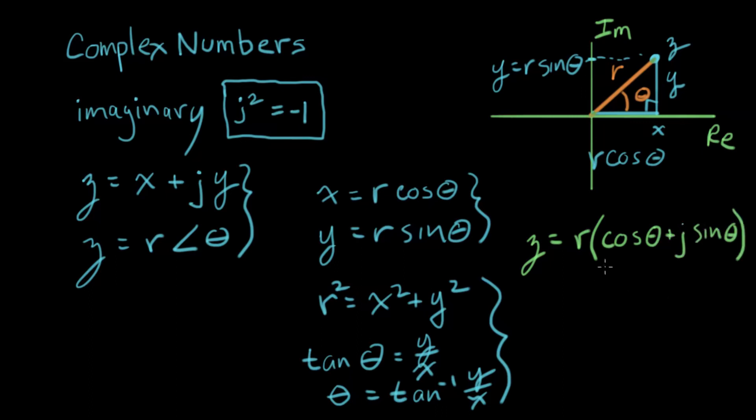Now if you look closely at this expression right here, we recognize this as one side of Euler's formula. And the other side of Euler's formula, I can rewrite z as r times e to the j theta, and this is called the exponential form of a complex number.